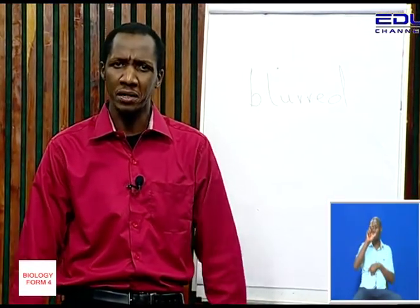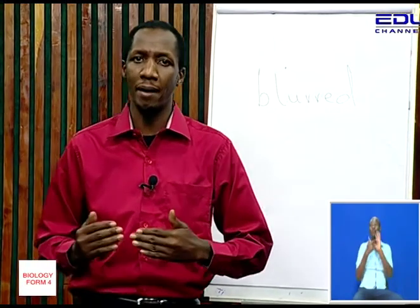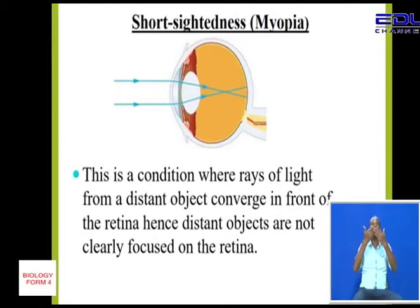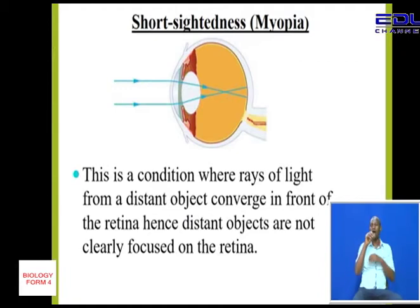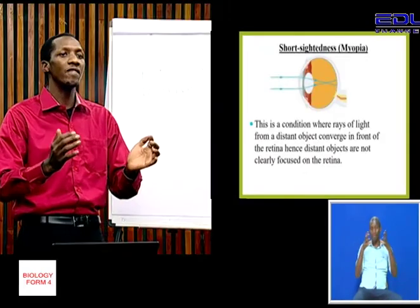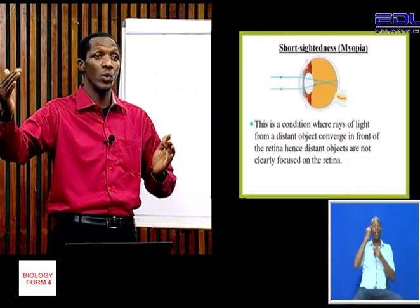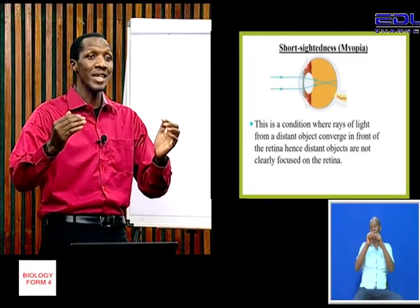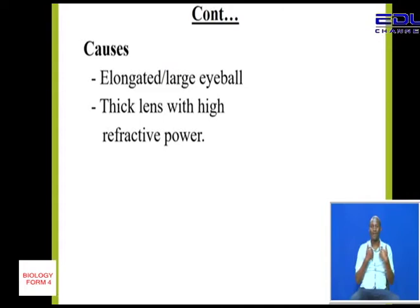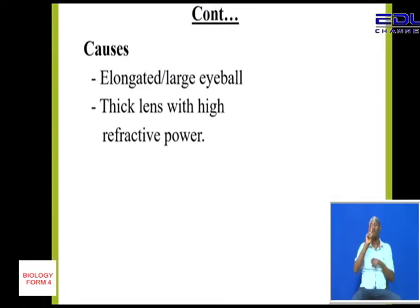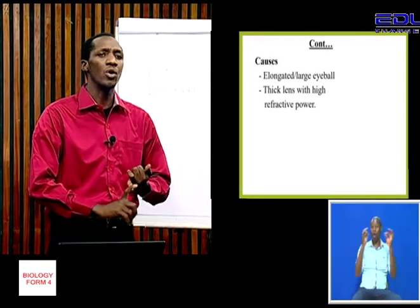What causes this defect? As you can see on the illustration diagram, the rays are converging before they reach the retina. One reason is when an individual has a long eyeball — if the eyeball is elongated, the lens will not have enough refractive power to reach the focal length where the retina is located. Another cause of myopia is when we have a thick lens with high refractive power compared to the distance of the focal length. These are the two causes of myopia: either a long eyeball or a thick lens.